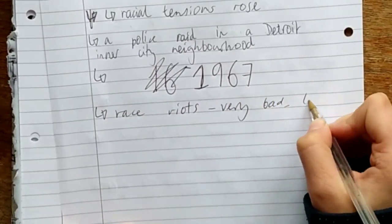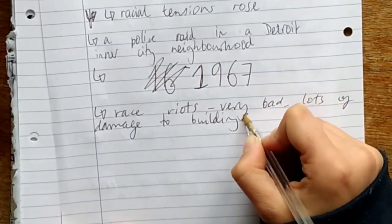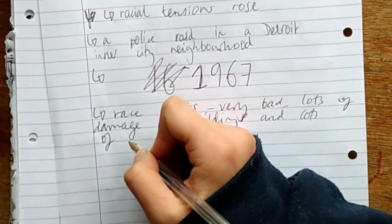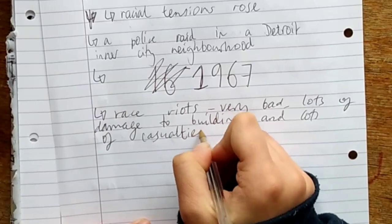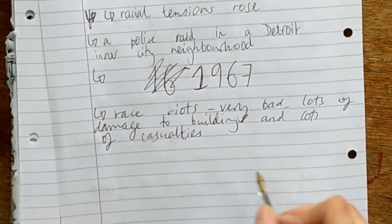This was in the summer of 1967 and there were riots, buildings burning down, violence and lots of damage to buildings and loss of human life. Thousands of people got injured and just over 40 people were killed.